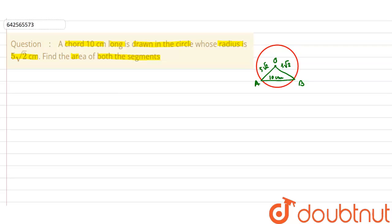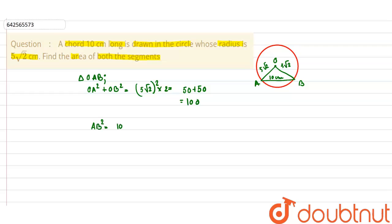In triangle OAB, OA² + OB² = (5√2)² + (5√2)² = 50 + 50 = 100. Also, AB² = 10 × 10 = 100. Since OA² + OB² = AB² = 100, both equations are equal.